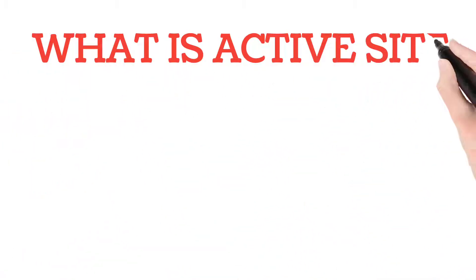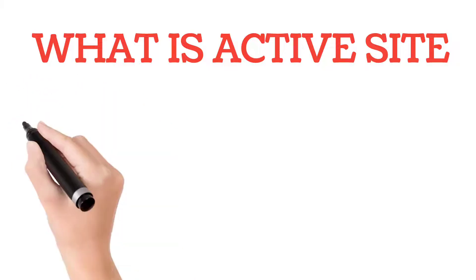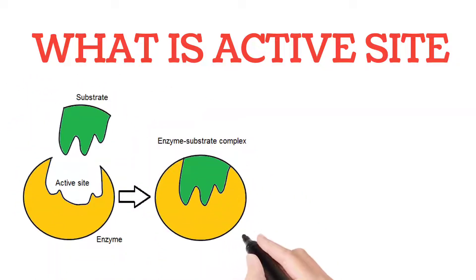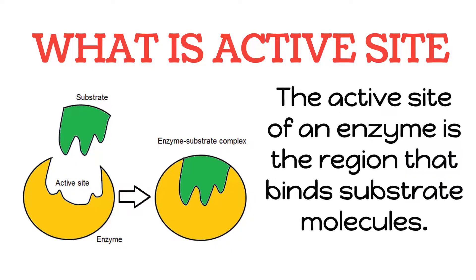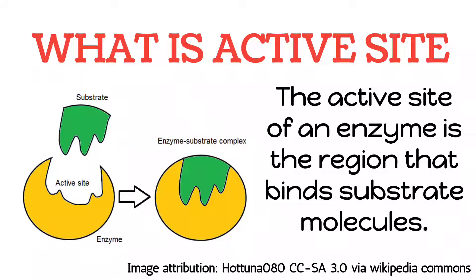What is an active site of an enzyme? The active site is the region where the substrate binds with the enzyme. The portion or region at which the substrate binds to the enzyme is known as the active site, also called the catalytic site. This active site is very much crucial for the activity of the enzyme.